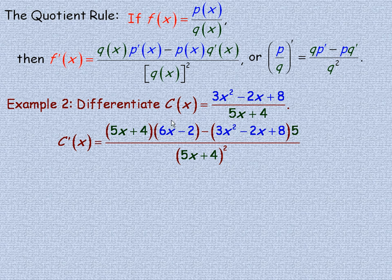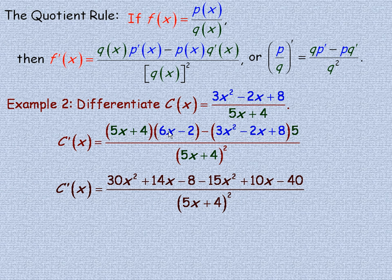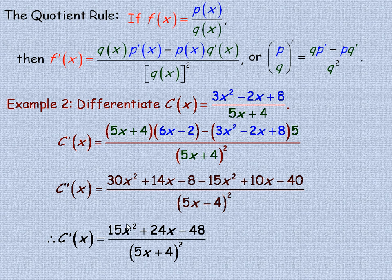Expanding: 5x times 6x is 30x squared; 24x minus 10x is 14x; 4 times negative 2 is negative 8. Distributing the 5 gives negative 15x squared plus 10x minus 40. Collecting like terms: 30x squared minus 15x squared is 15x squared; 14x plus 10x is 24x; negative 8 minus 40 is minus 48. So we get the same derivative as on the last page, confirming both methods agree.